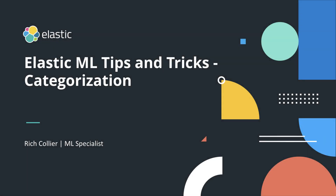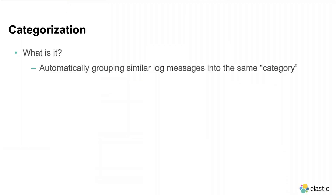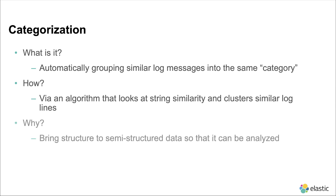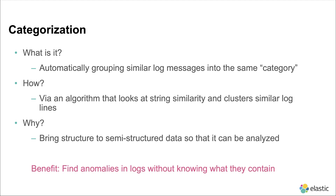Machine learning has a little-known feature called categorization. Let's learn how it works. Categorization is automatically grouping similar log messages together into the same kind of category. It's done via an algorithm that looks at string similarity and clusters similar log messages together. You'd want to do this because we need to bring structure to otherwise semi-structured data so that it can be analyzed. The real benefit is that we can find anomalies in log files without knowing exactly what they contain.